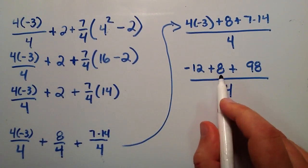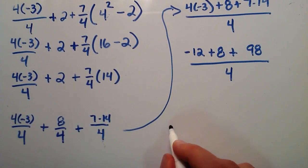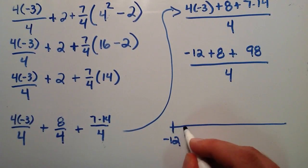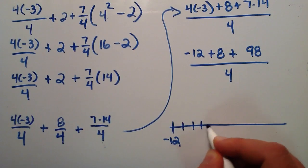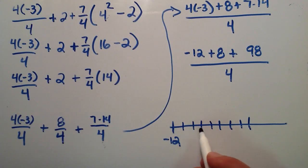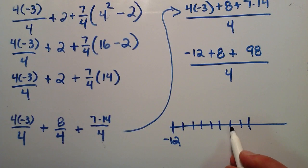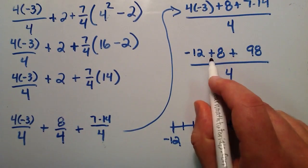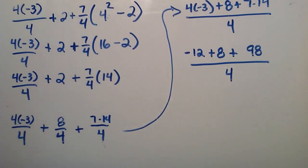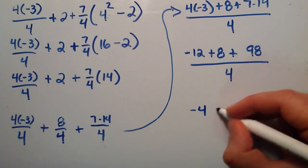So now we have negative 12 plus 8. If we look at this on a number line, we start at negative 12 and count up 8 units in the positive direction: negative 11, negative 10, negative 9, negative 8, negative 7, negative 6, negative 5, negative 4. So negative 12 plus 8 equals negative 4. The first two terms in the numerator change to negative 4, and the last term remains 98, all over the common denominator of 4.